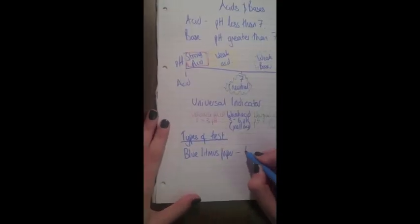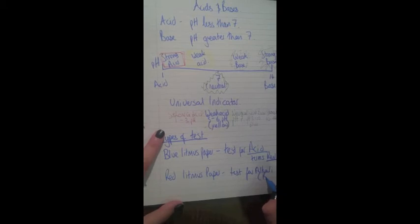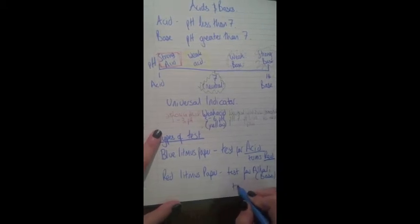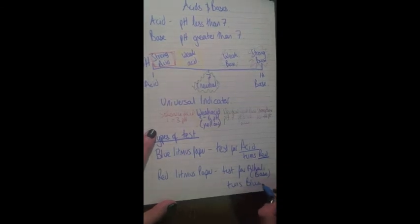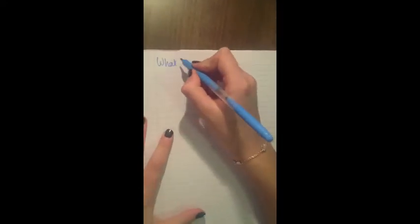There are tests we can do to test whether a solution is acidic or basic, and these involve using litmus paper. Blue litmus paper is used to test for acids — if the solution is acidic, the blue litmus paper will turn red. Red litmus paper is used to test for bases — if you put your solution onto the red litmus paper and it turns blue, it means your solution is basic. If you use red litmus paper to test an acidic solution, there would be no change.